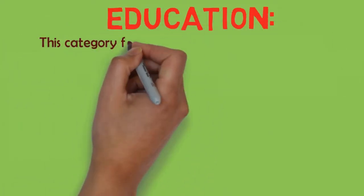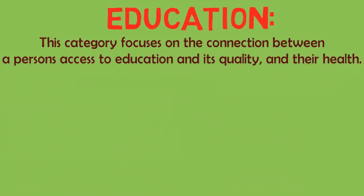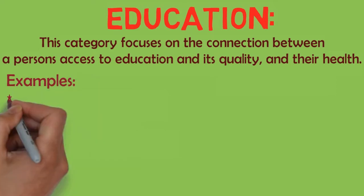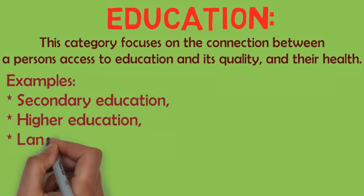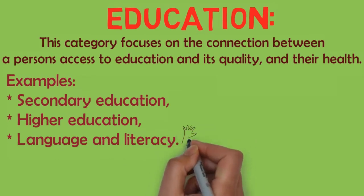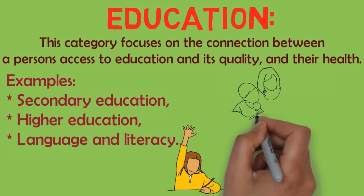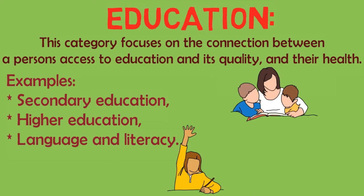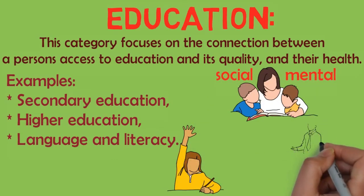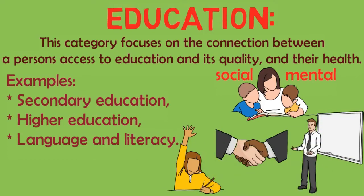Thirdly, we have education. This category focuses on the connection between a person's access to education, its quality, and their health. Examples include secondary education, higher education, language, and literacy. Whether a child or adolescent can access quality education throughout their development can determine their future health conditions. Early childhood education is essential for social and mental development, and a good quality high school education can open new doors to further education and employment opportunities.